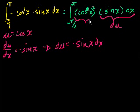And this right here is what? Cosine of x is u. That was our original substitution. So we have u squared. So now let's take the integral.